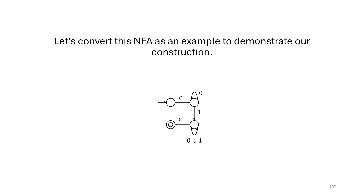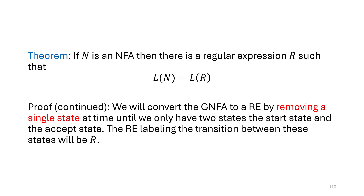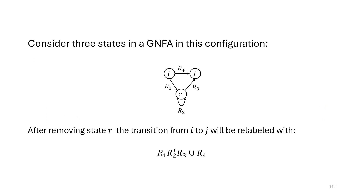Now we're going to use this machine to build up our regular expression. We're going to remove a single state at a time until we only have two states left — the new start state and the new accept state. We never remove those two states. When we reach a point where only those two states remain, the regular expression labeling the transition between them will be our final regular expression corresponding to the machine.